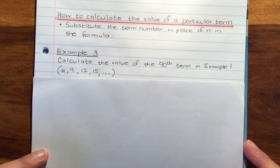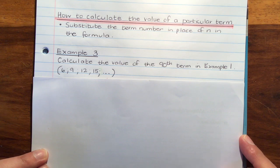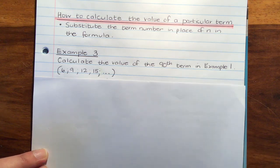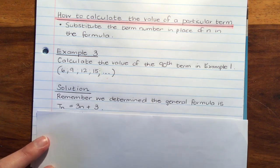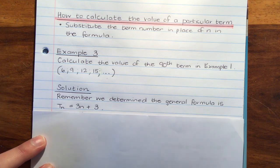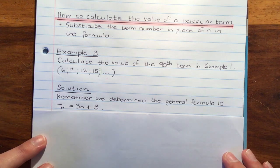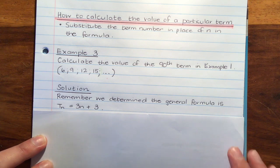Our example is calculate the value of the 90th term in example 1. So that was the pattern that went 6, 9, 12, 15. So how are we going to do that? Well, first of all, remember that we already worked out what the general formula is in example 1. It's Tn equals 3n plus 3.